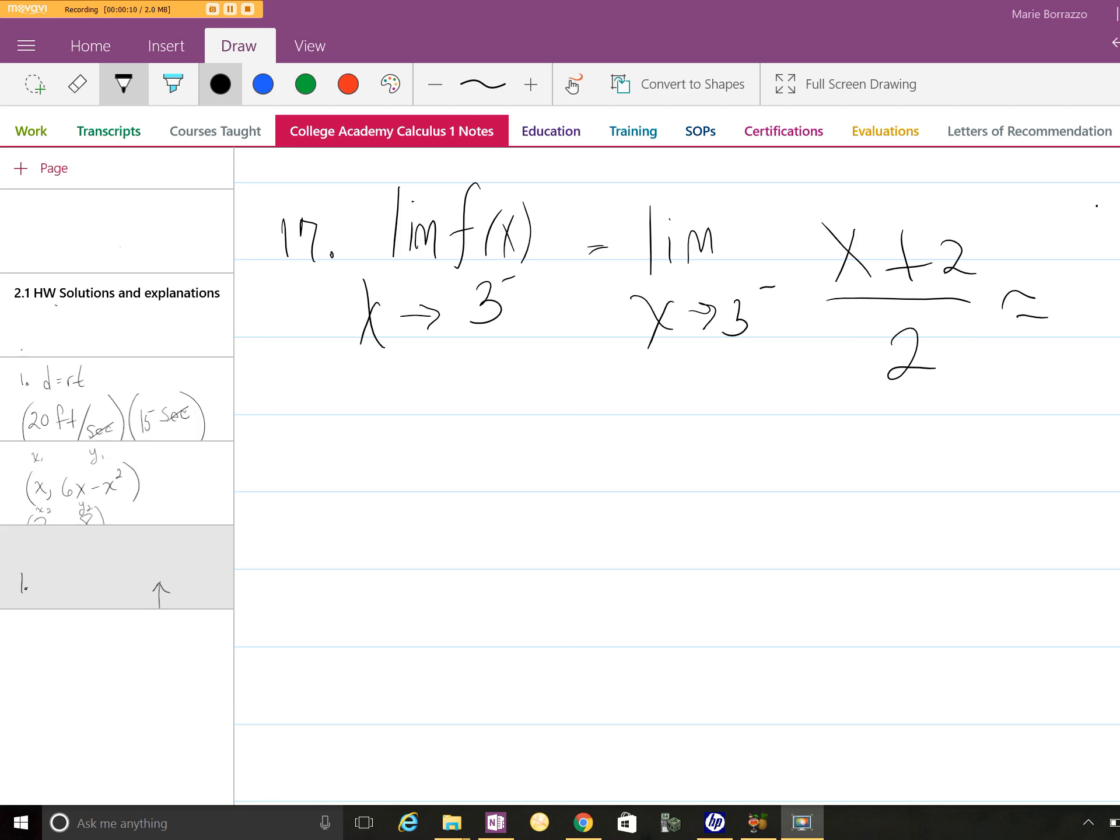So if I'm looking at a question such as this one, you're looking at the limit of f(x) as x approaches 3 from the left. The function given to us is (x + 2) / 2. This is as simple as plugging in: (3 + 2) / 2, and your limit is 5/2.